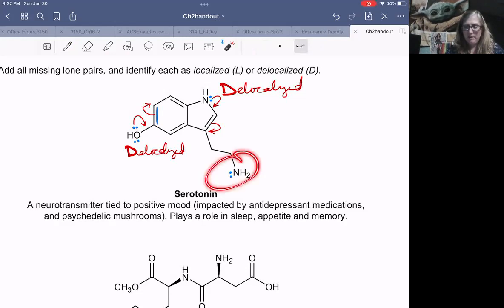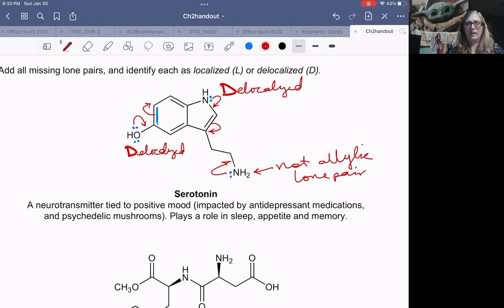Our last nitrogen has no adjacent pi bond. It's not allylic, not an allylic lone pair. Why can't I just move that lone pair? Because this carbon has two hydrogens here. I can't just add a fifth bond. There is no resonance. So how would we describe that lone pair? It is localized. In other words, it's just sitting on that nitrogen, nowhere else to go. It is not involved in resonance.